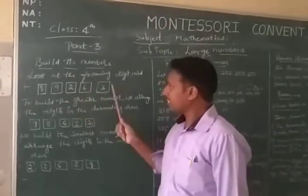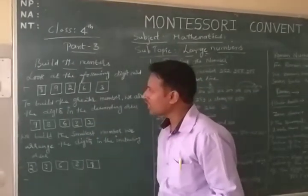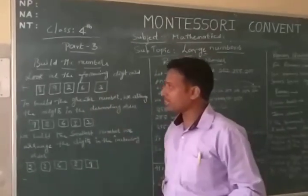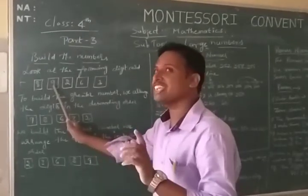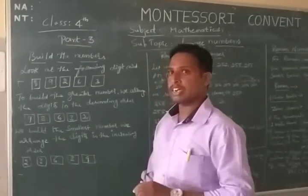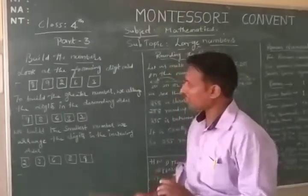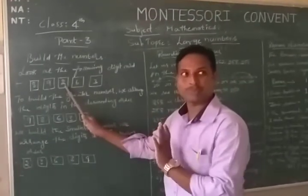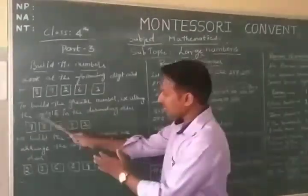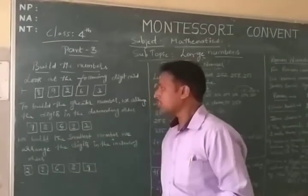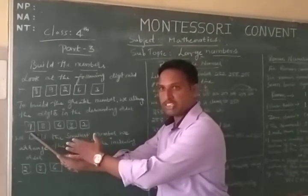In these digit cards, which one is the greatest number? The greatest number is 9. Which one is the smallest number? The smallest number is 2. So we arrange these digit cards: first is the greater number, which is 9.